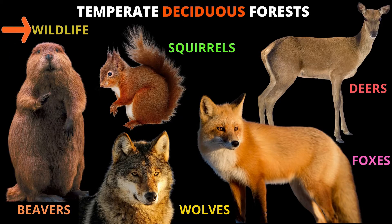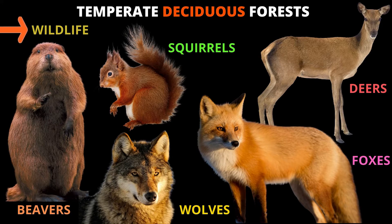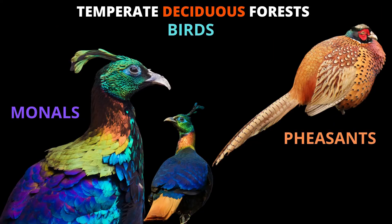What about the wildlife of the temperate deciduous forests? Look at the picture — can you see beavers? We can find beavers in the temperate deciduous forests, and also squirrels, wolves, foxes, and deer. You can also find some beautiful birds in the temperate deciduous forests, like the monals and the pheasants.